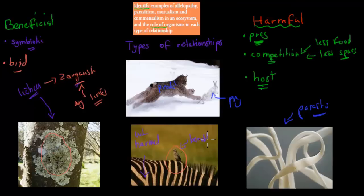When it comes to the ecosystem — any given area — we want to look at the different types of relationships. Are they harmful? Are they beneficial? And what kind of relationships are there? So I'm going to talk about allelopathy, parasitism, mutualism, and commensalism now — these are all different types of relationships.